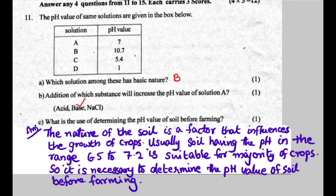What is the use of determining the pH value of soil before farming? The nature of the soil is a factor that influences the growth of crops. Soil having a pH in the range 6.5 to 7.2 is suitable for the majority of crops, so it is necessary to determine the pH value of soil before farming.